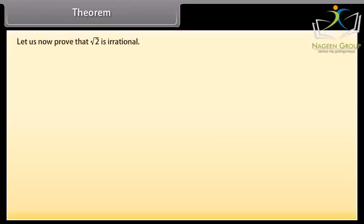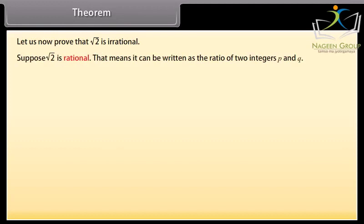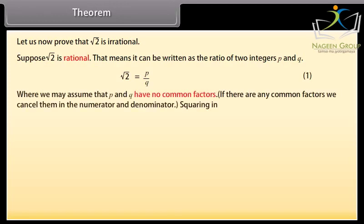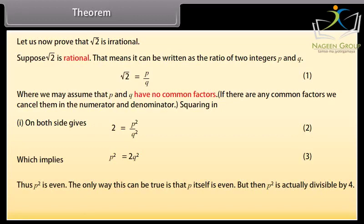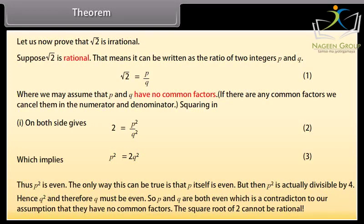Theorem: Let us now prove that √2 is irrational. Suppose √2 is rational — that means it can be written as the ratio of two integers p and q: √2 = p/q (equation 1), where we may assume that p and q have no common factors. Squaring both sides gives 2 = p²/q² (equation 2), which implies p² = 2q² (equation 3). Thus p² is even, which means p itself is even. But then p² is divisible by 4, hence q² and therefore q must also be even. So p and q are both even, which contradicts our assumption that they have no common factors. Therefore √2 cannot be rational.